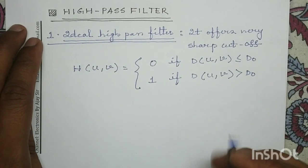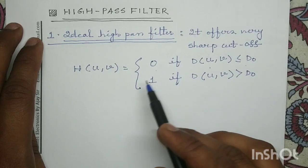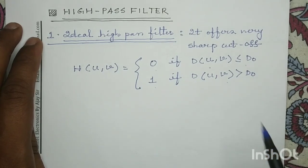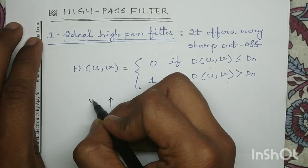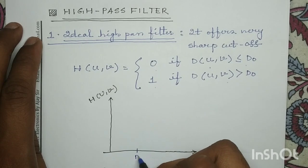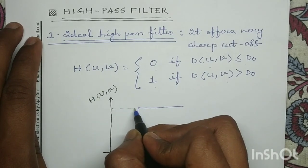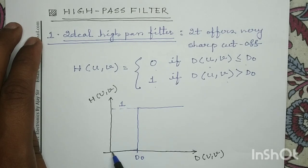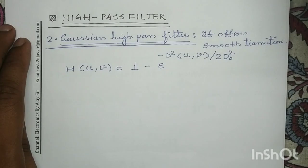Similarly, the ideal high pass filter offers a very sharp cutoff. H(u,v) equals 0 for all frequency components less than or equal to D₀, and H(u,v) equals 1 for all frequency components greater than D₀. If we plot the transfer function with H(u,v) on the y-axis and D(u,v) on the x-axis, the filter coefficient is 0 for all frequencies ≤ D₀ and rises to 1 for all frequencies above D₀.